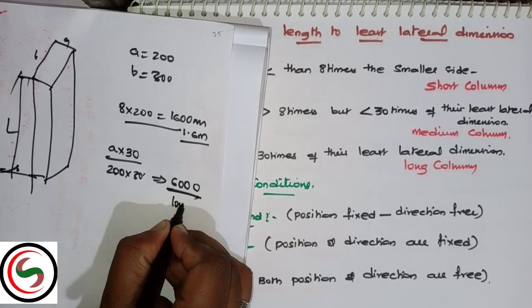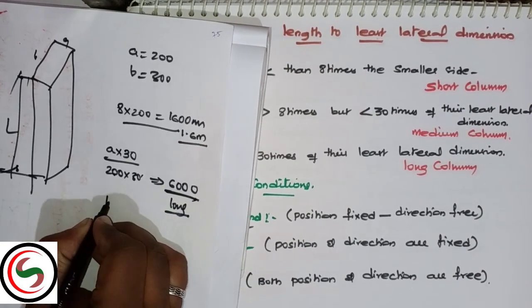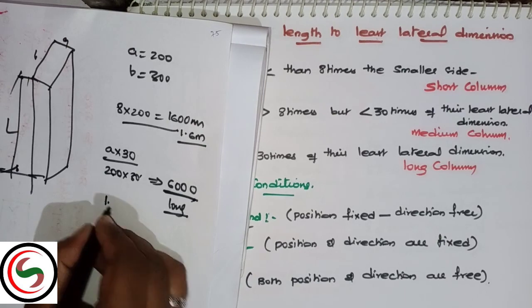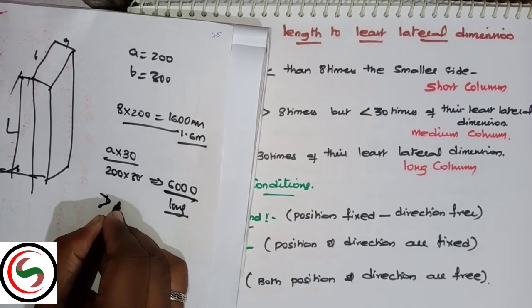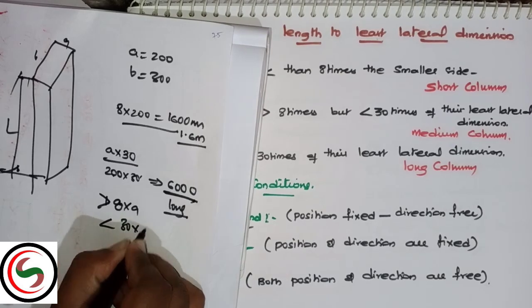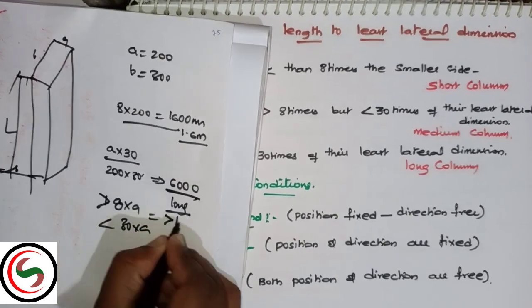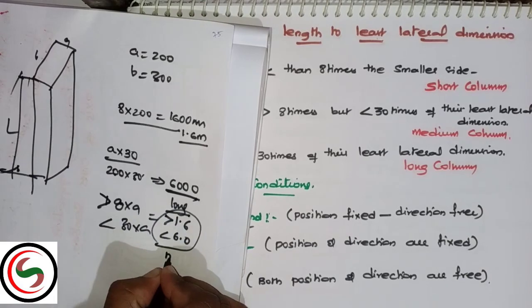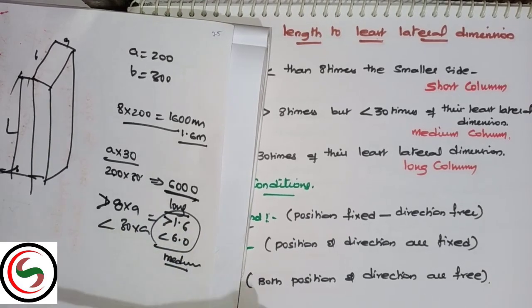Suppose a times 30 means 200 times 30, which is 6000. If this length is about 6 meters or above, it is called a long column. If the column length is greater than 8 times a but less than 30 times a, it is a medium column.